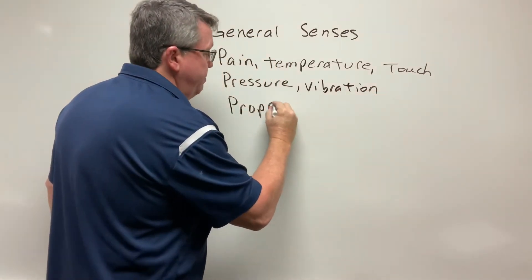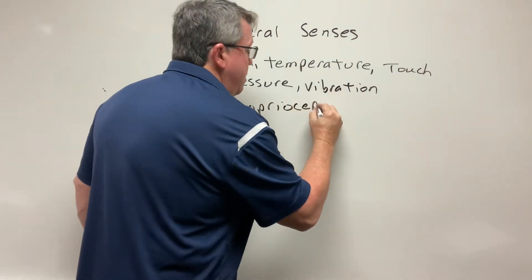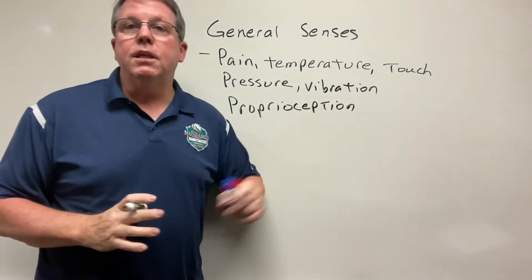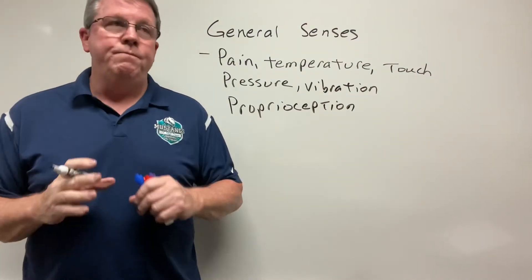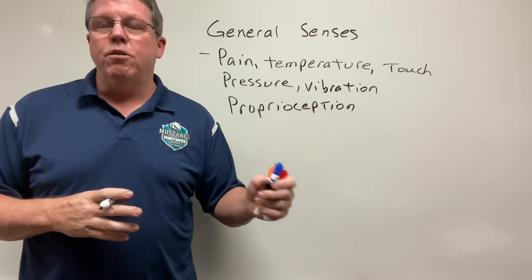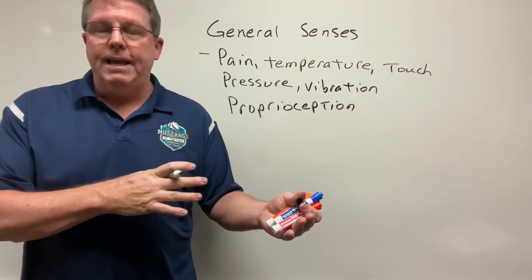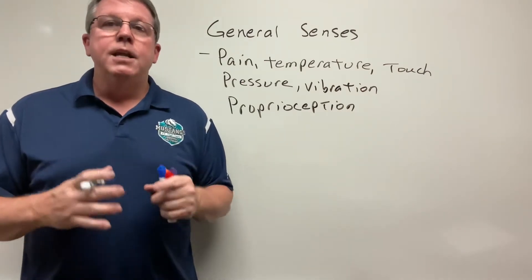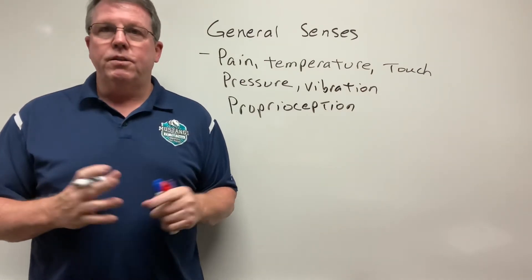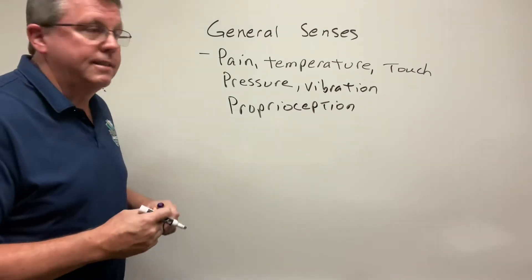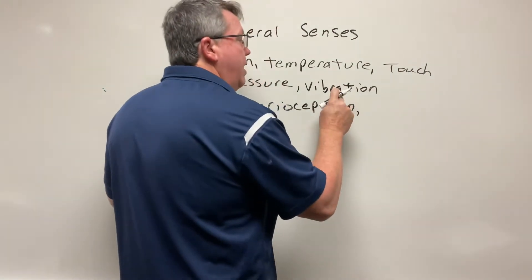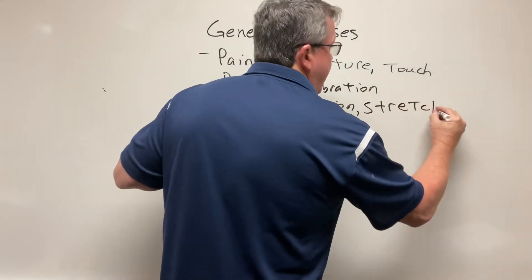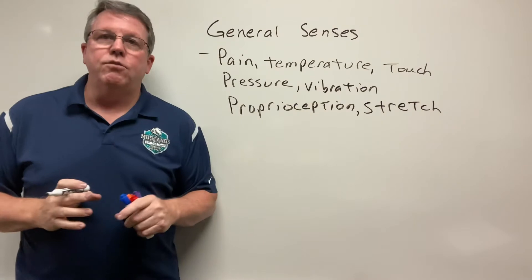We also have proprioception. Proprioception is basically your body's awareness in space. If you close your eyes and think about where your left hand is right now, you know where it's at — that's proprioception. Your body does this subconsciously all the time so you don't fall over. We also have stretch as another general sense.